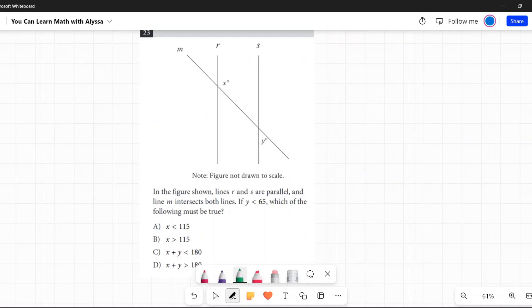Figure not drawn to scale. In the figure shown, lines r and s are parallel, and line m intersects both lines. If y is less than 65, which of the following must be true?